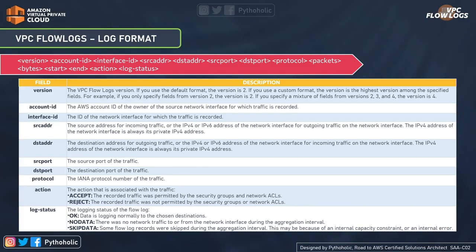The protocol field records the IANA protocol number of the traffic. IANA stands for Internet Assigned Numbers Authority, the organization responsible for maintaining the collection of registries for protocol numbers. The action field is very important — it indicates whether the traffic was accepted or rejected. 'Accepted' means the recorded traffic was permitted by the security group and network ACL. 'Rejected' means it was not permitted. From this field alone, you can identify problems with network ACL or security group permissions.